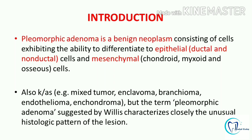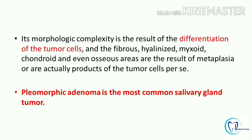Pleomorphic Adenoma is also known as mixed tumour, encleoma, branchioma, endothelioma, and endochondroma. But the term Pleomorphic Adenoma was suggested by Willis and further taken up by WHO. This term is attributed to the characterization of this tumour by various histological patterns. The morphology of this tumour is because of the differentiation of the tumour cells, and the stroma in the background is actually the product of the tumour cells.